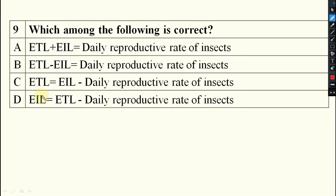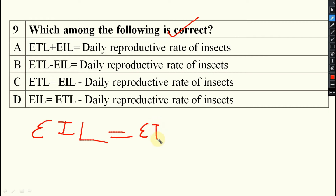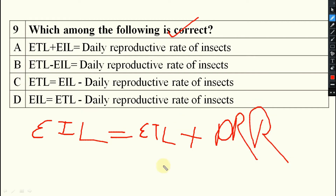Which among the following is correct regarding the relationship between EIL and ETL? ETL equals EIL minus the daily reproductive rate of the insect. So ETL must be smaller than EIL. The correct answer is option C: ETL equals EIL minus the daily reproductive rate of the insect.